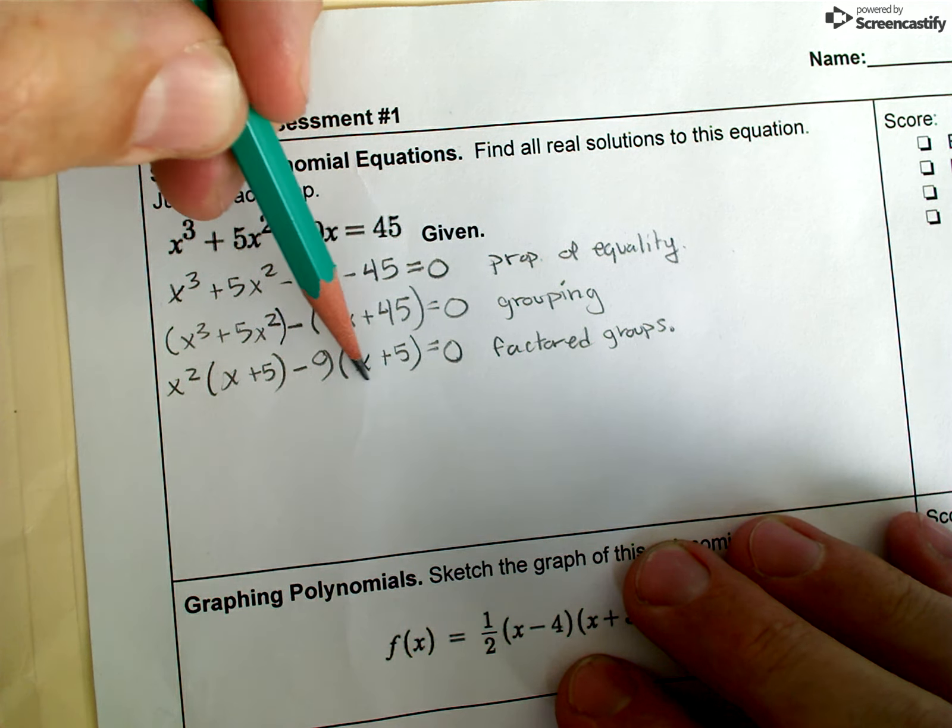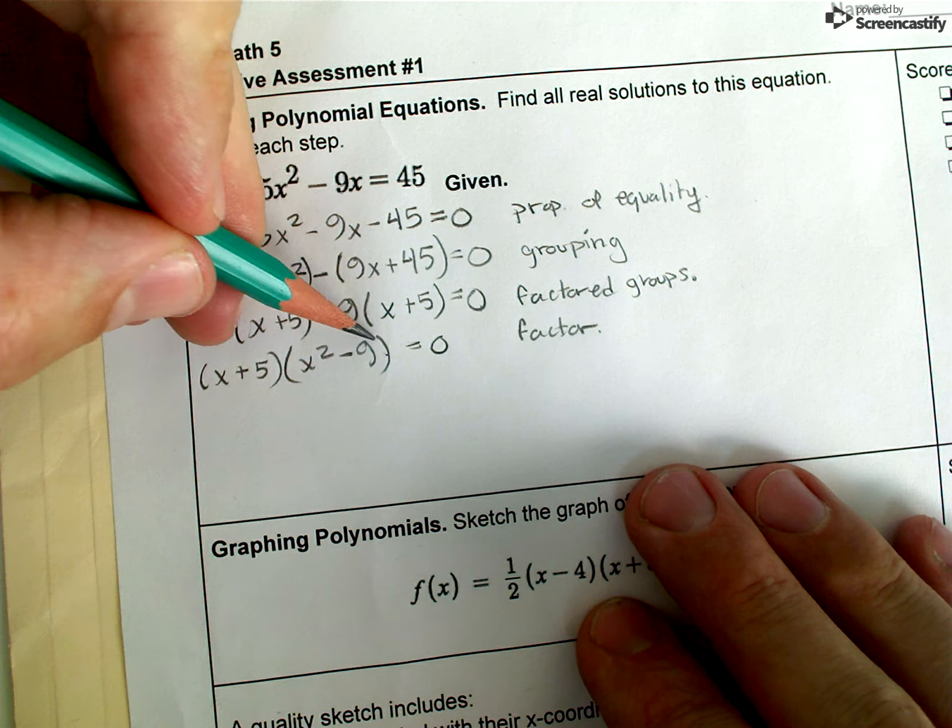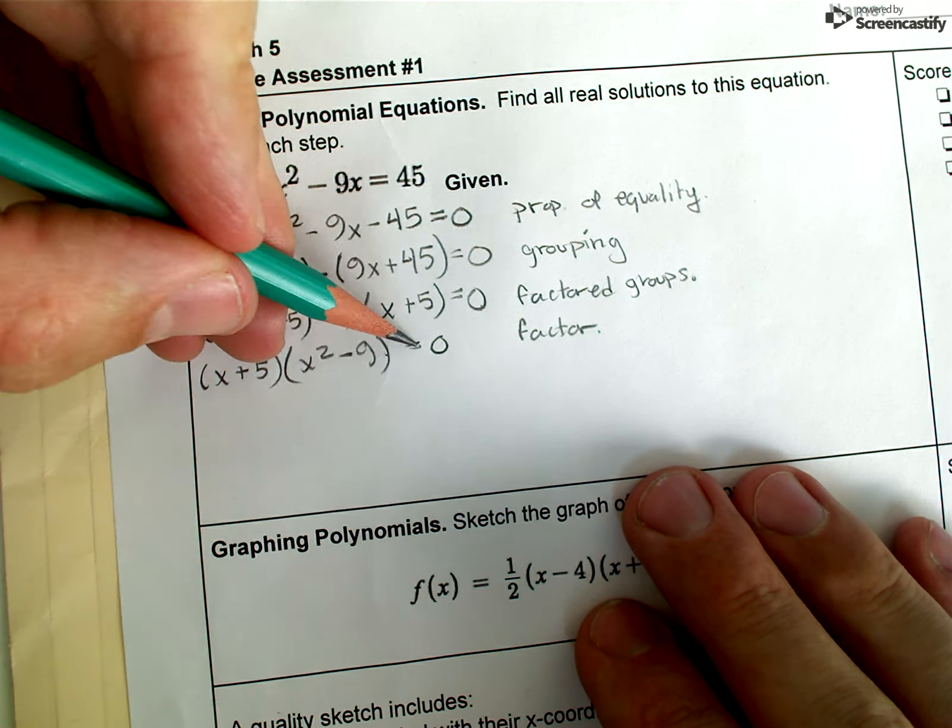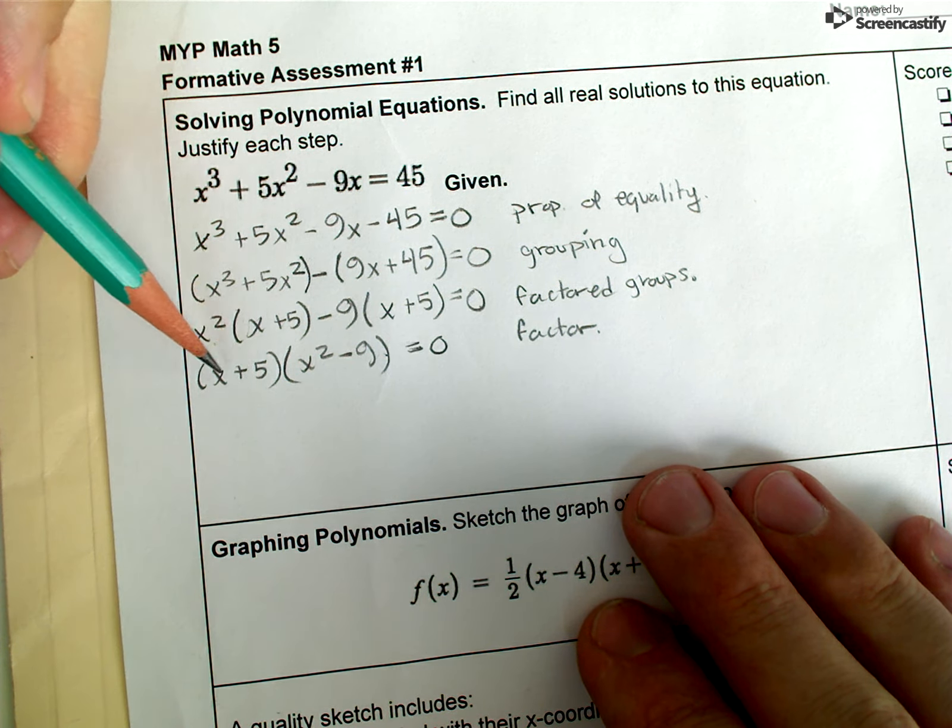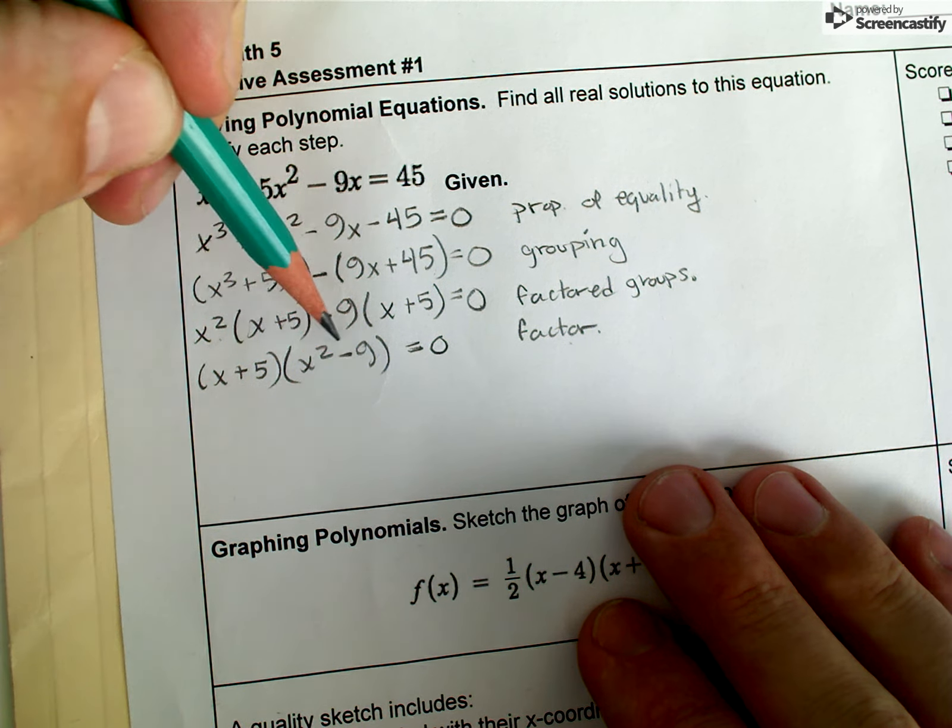I just factored the groups. Now I can continue factoring by just treating this and this as two separate terms with a common factor. Let me just factor that common factor out and I'm left with the x squared minus nine, and that still equals zero. So again, I factor.